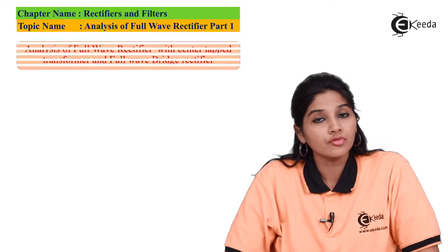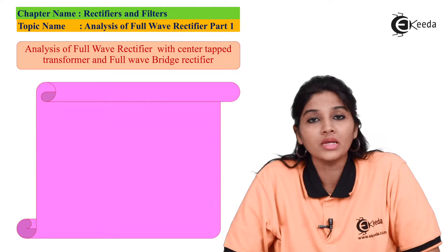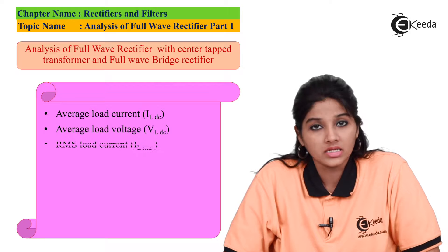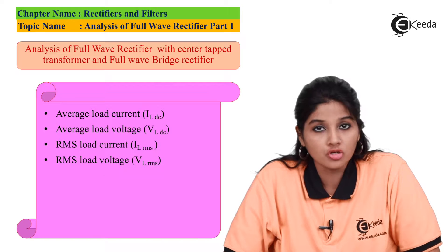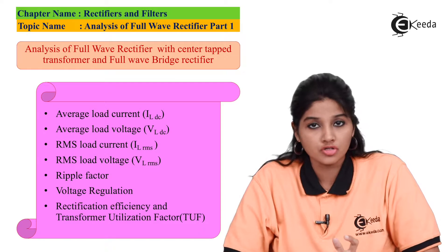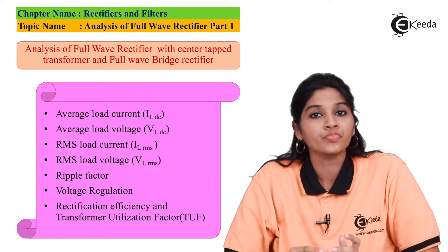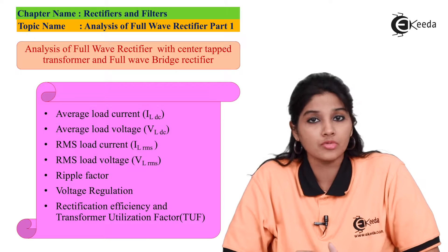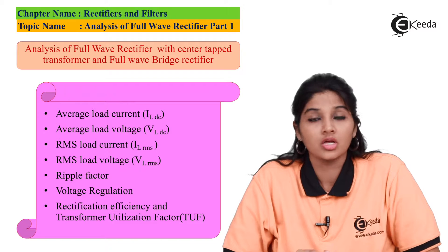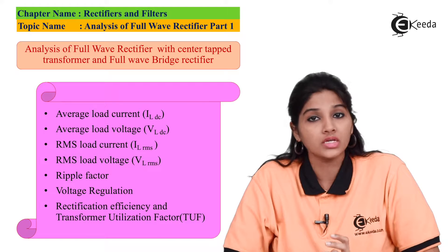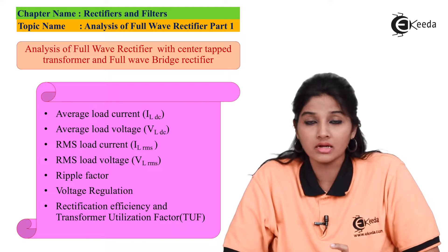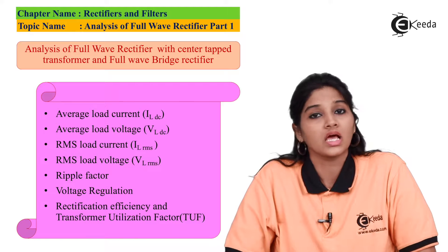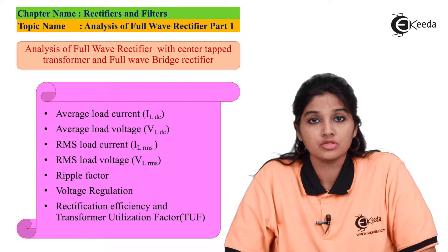The first four main parameters are DC or average load current, DC or average load voltage, RMS load current, and RMS load voltage — that means VLDC, ILDC, VLRMS, and ILRMS.